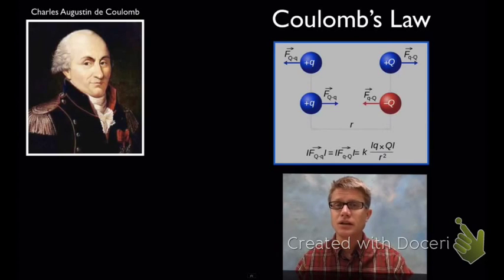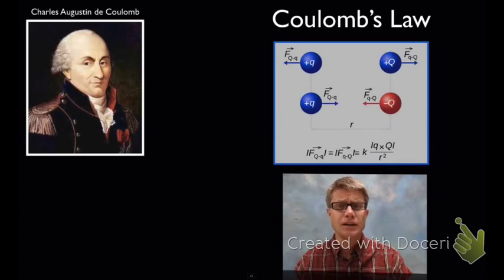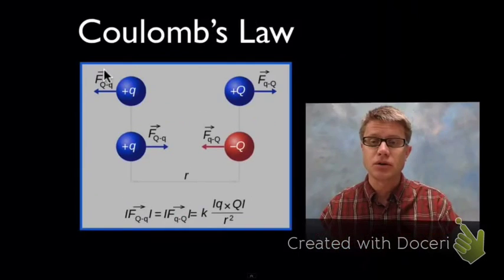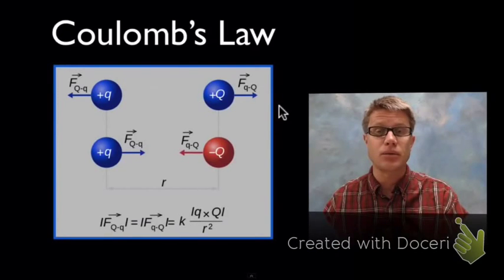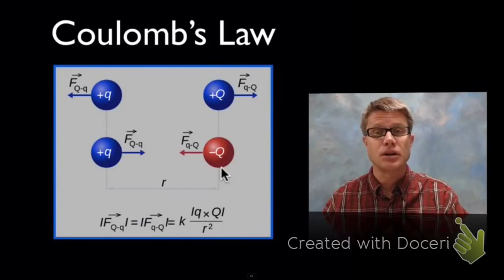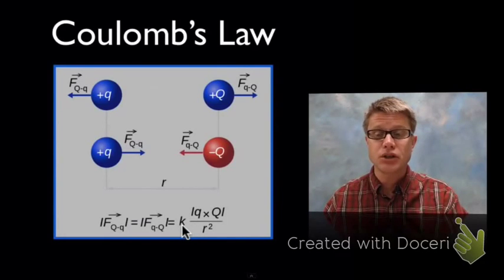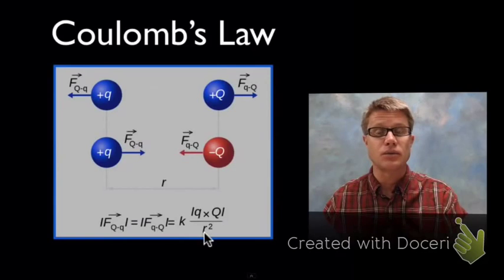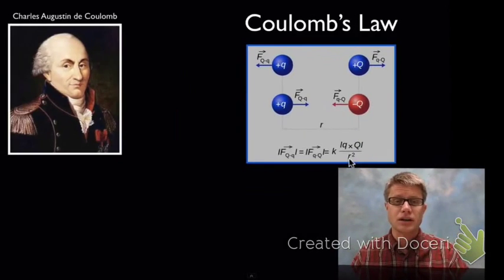Who was Coulomb? He was a French physicist studying charges. A lot of people thought there was some law that could be applied to charges, and he was the first one to really quantify it. If we have two like charges, they repel; if we have two unlike charges, there's going to be an attraction. Here's the equation: you have a Coulomb's coefficient, then multiply the charges, and then divide by the radius squared.